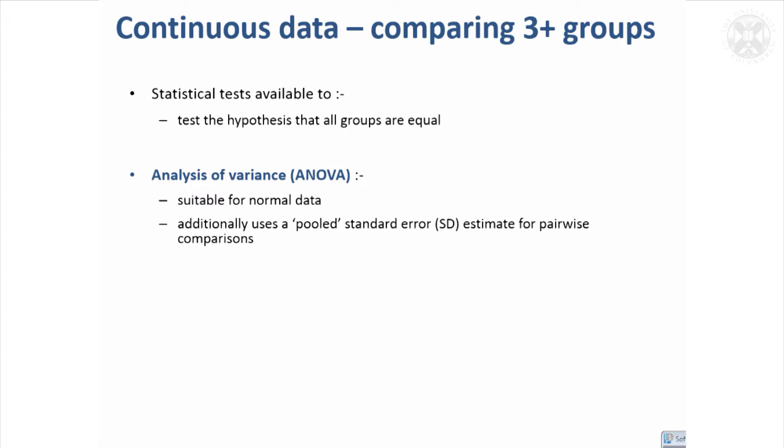A way of doing that that's been around for probably about 100 years now is something called Analysis of Variance, usually abbreviated as ANOVA. That's suitable for normal data.